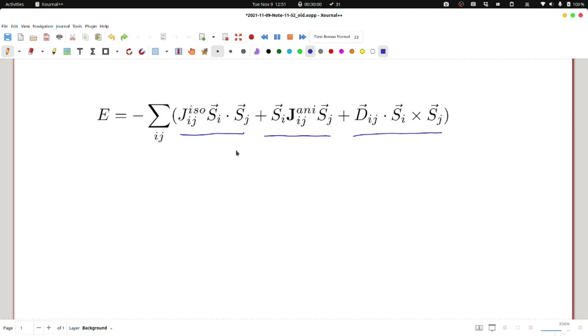The first term is called isotropic because if there are two spins and they are rotated by the same angle, the energy due to this interaction will be the same.